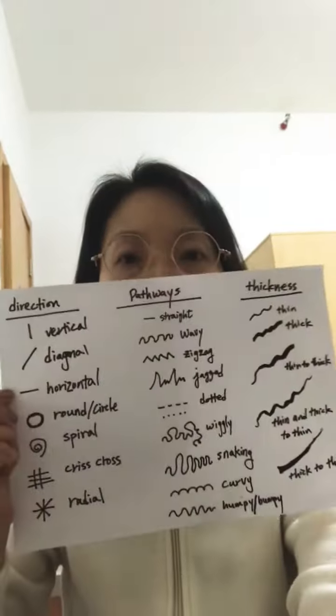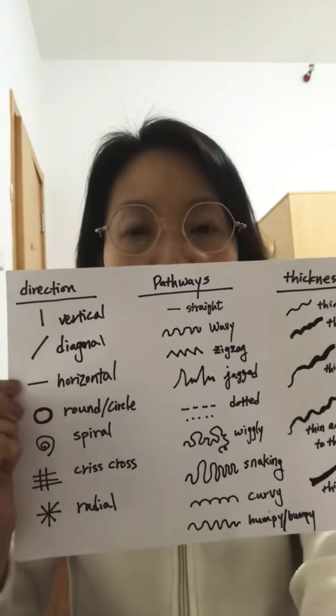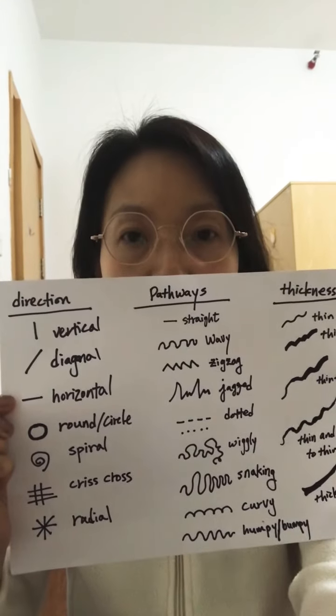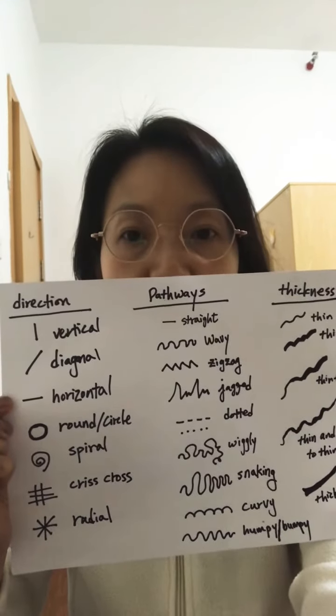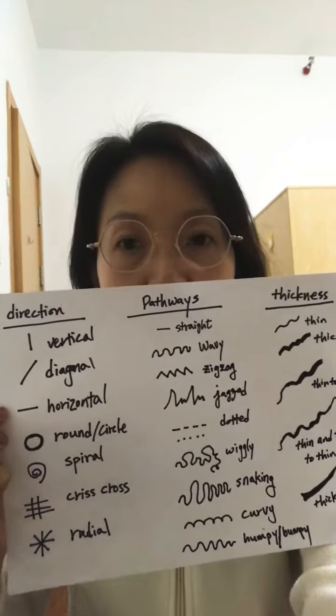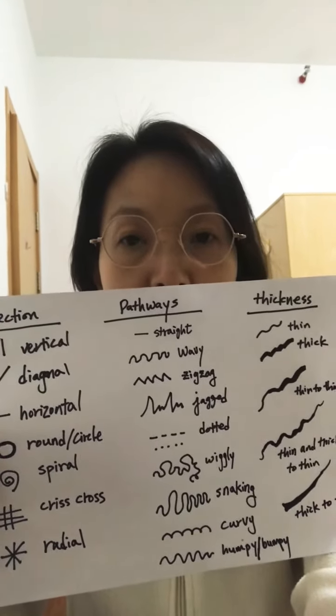I'm going to show you some formula — a format that you are going to do. First, you need to take a look at my chart. You'll see the inner directions — those are the different types of lines or circular shapes that you are going to work on. The next one is pathways — those are the ones you need to put in repetitions.